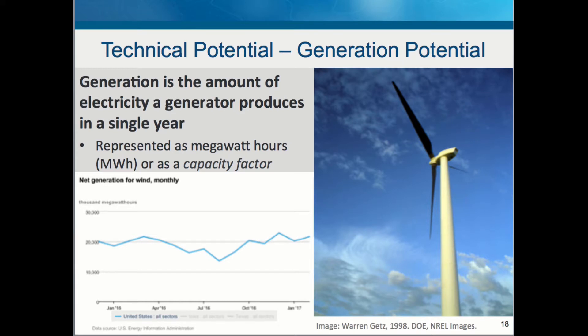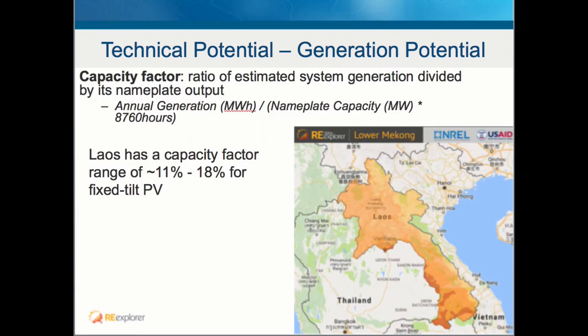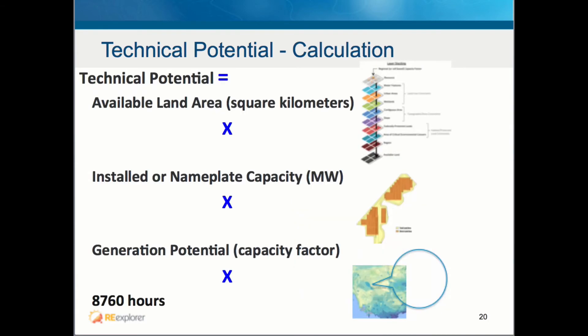Now that we have the nameplate capacity for our land area, we need to calculate the likely generation of our land area for a single year. Generation is represented as megawatt hours or as a capacity factor. A capacity factor is the ratio of estimated system generation divided by its nameplate output. Laos, for example, has capacity factors that range between 11% and 18% for fixed-tilt photovoltaics. We now have all the necessary inputs — available land area, nameplate capacity, and capacity factor — which are multiplied by the number of hours in a year, 8,760, to generate the potential resource available given technical constraints.